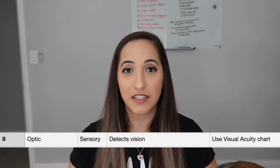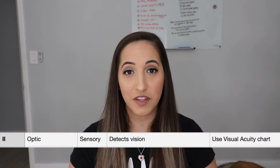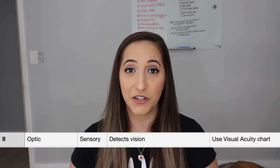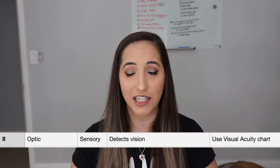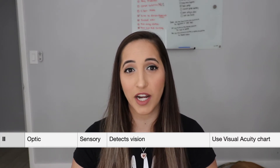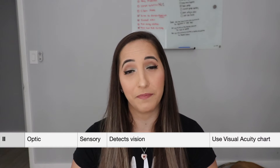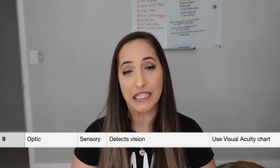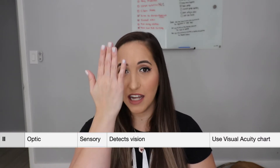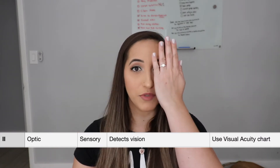The second cranial nerve is the optic nerve. It is a sensory nerve to detect vision. In order to test for this, you're going to want to have the visual acuity chart — the one with the big E — and then have a patient just read a line on the chart.